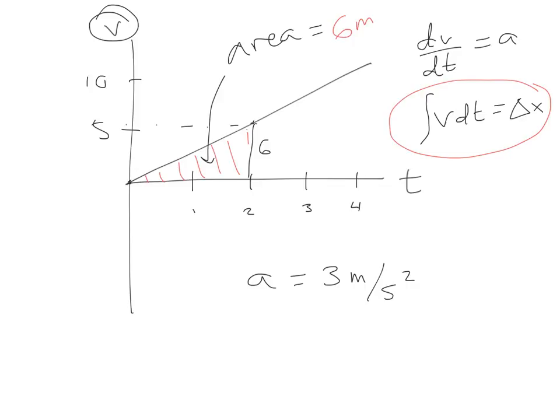They might get all tricky on you, sometimes happens, and say, oh yeah smart guy, what's the distance that it travels between 2 and 3 seconds? Well, fine. They're just asking for, then, a different area. That would be just this area. You could calculate it and go for it. I'm not sure I need to work that out with you right now. But just know that if you have a velocity versus time graph, the integral is going to be displacement, and the derivative is going to be acceleration.